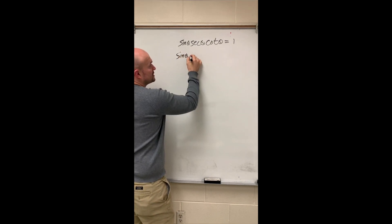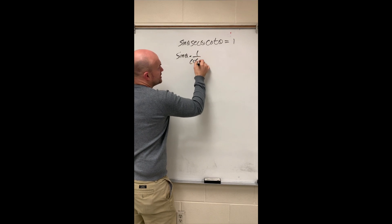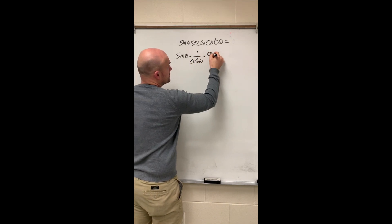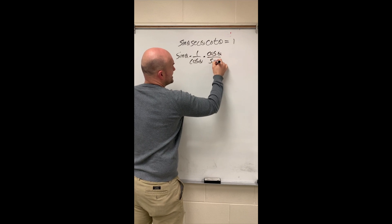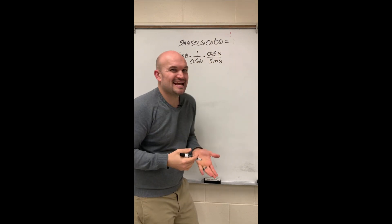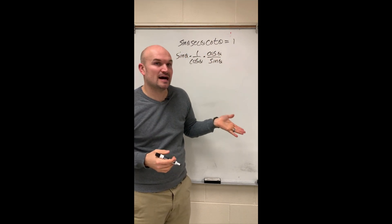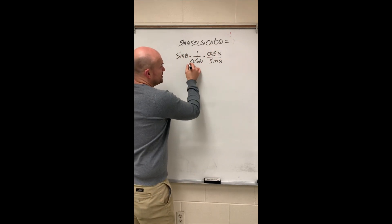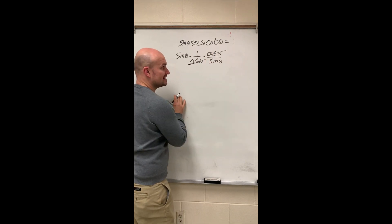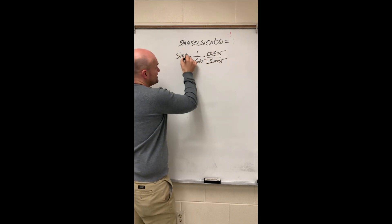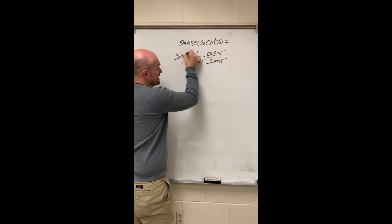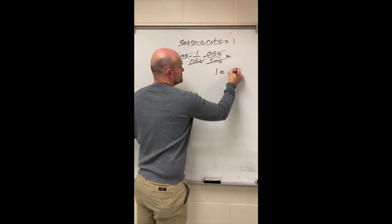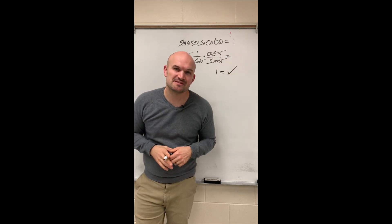I'm going to write everything in terms of sines and cosines. Secant I can write as 1 over cosine of theta. And cotangent I can write as cosine of theta over sine of theta. I could write it as 1 over tangent, but that's not going to help me divide anything out. I know if this is going to divide to 1, I need a lot to divide out. Here you can see that cosine of theta over cosine of theta divides to 1, and sine of theta over sine of theta divides to 1. So therefore I get 1 equal to 1, and my identity has been verified.